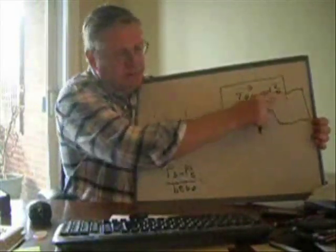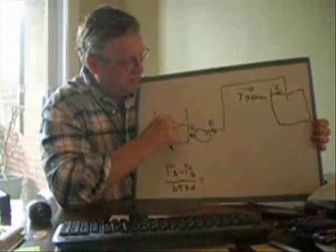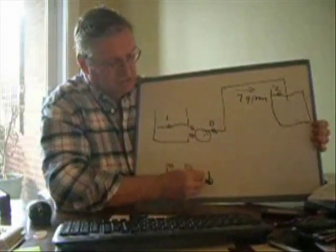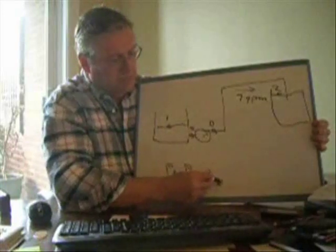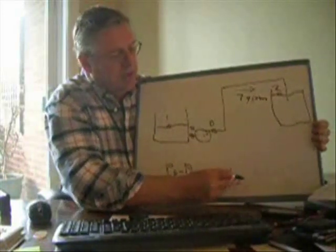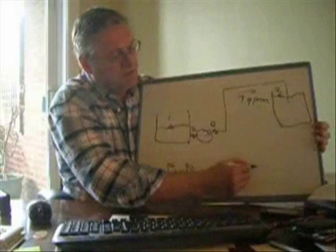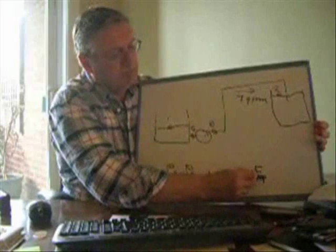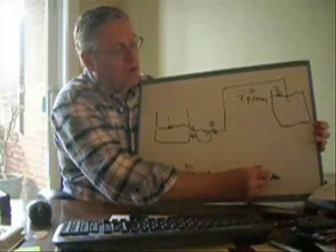So the static head is the difference in height between points one and two. Not between the pump and the point two, but one and two, because fluid particles have to go from one to two. So that's going to be H2 minus H1, and then we have to add the friction between point one and two.